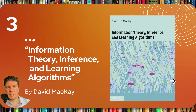Next is Information Theory, Inference, and Learning Algorithms by David McKay. This is an excellent text combining the topics of information theory and machine learning. It covers data compression, error correction codes, as well as a number of inference methods such as Markov chain Monte Carlo and variational inference. I particularly like the numerous examples and exercises presented throughout the chapters of this book.